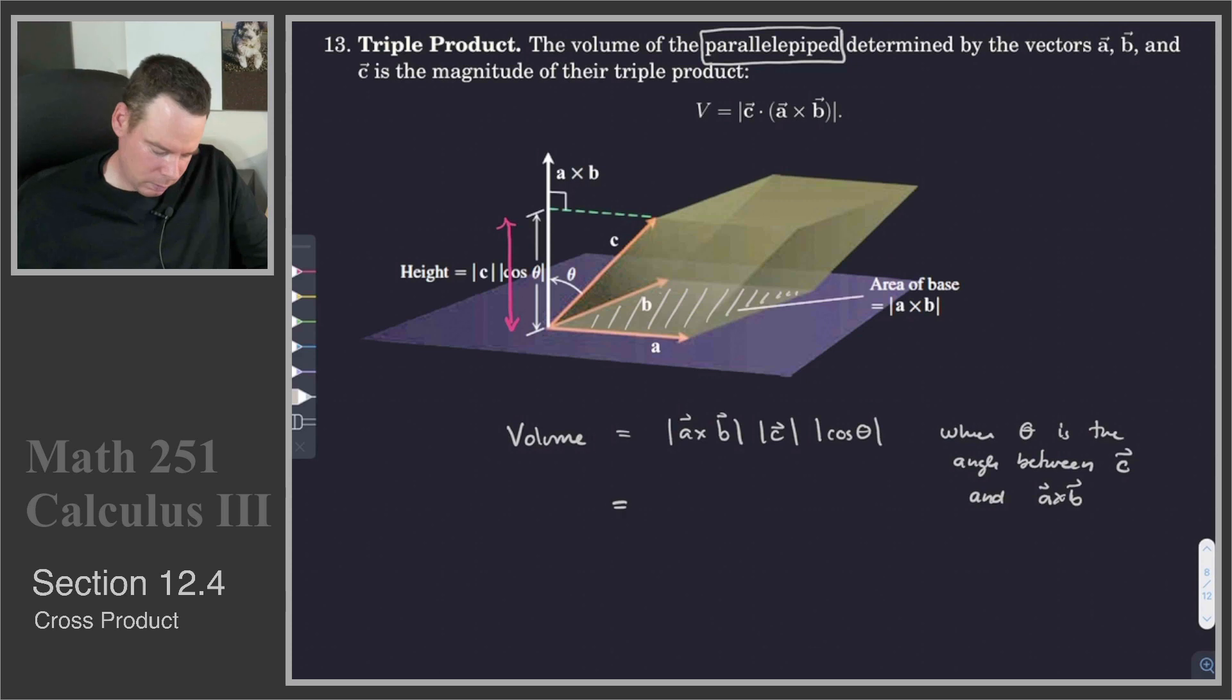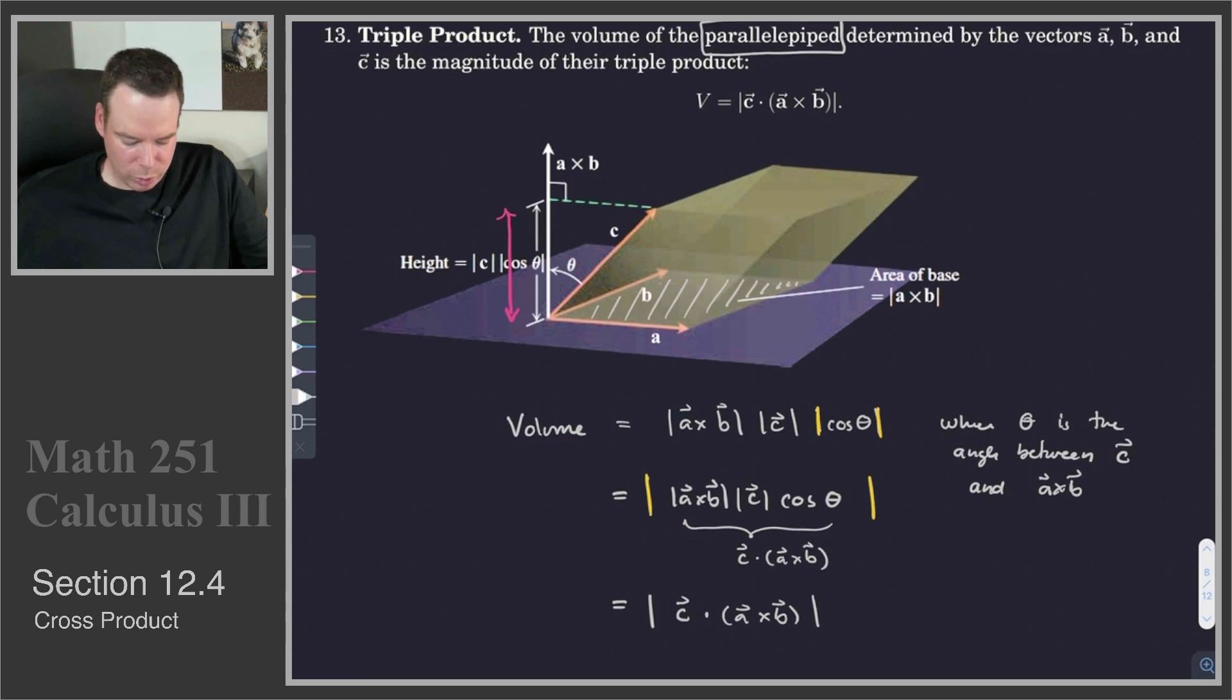And so now we can pull the absolute value signs out around the whole expression. So I'm taking these absolute value signs around the cos theta, and I'm just bringing them around the whole expression. So that's A cross B in magnitude times the magnitude of C, times cosine of the angle between them. But this expression here, that's just the dot product of those two vectors. It's a dot product of C and A cross B. So this becomes the magnitude of the dot product of C and A cross B. And so that's telling me that the scalar triple product, so A cross B and then dotted with C, the magnitude of that has a geometric interpretation. It's the volume of the parallelepiped.